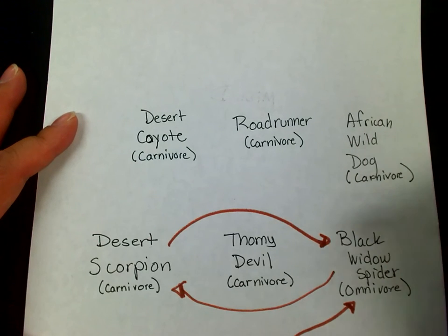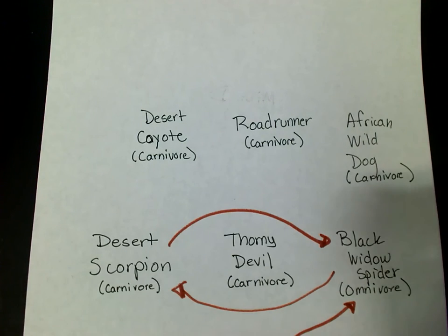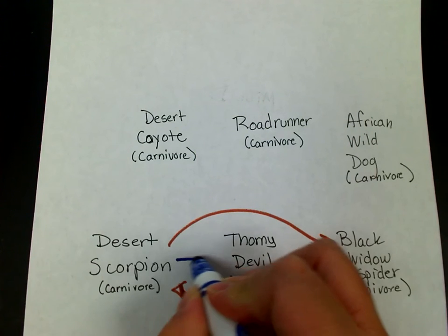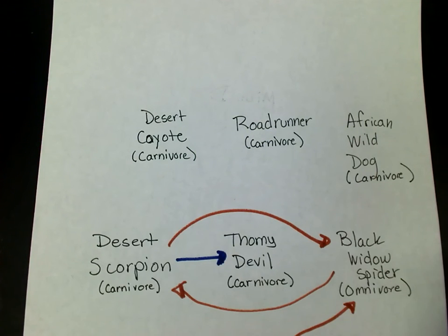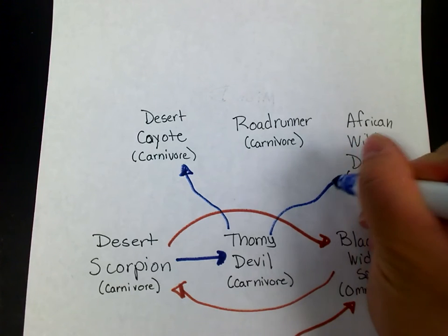I switch markers and do the thorny devil. According to my research, the thorny devil is a carnivore and will actually eat scorpions, so I draw an arrow from the desert scorpion to the thorny devil. Then whatever eats the lizards — coyotes will eat lizards and dogs will eat lizards.